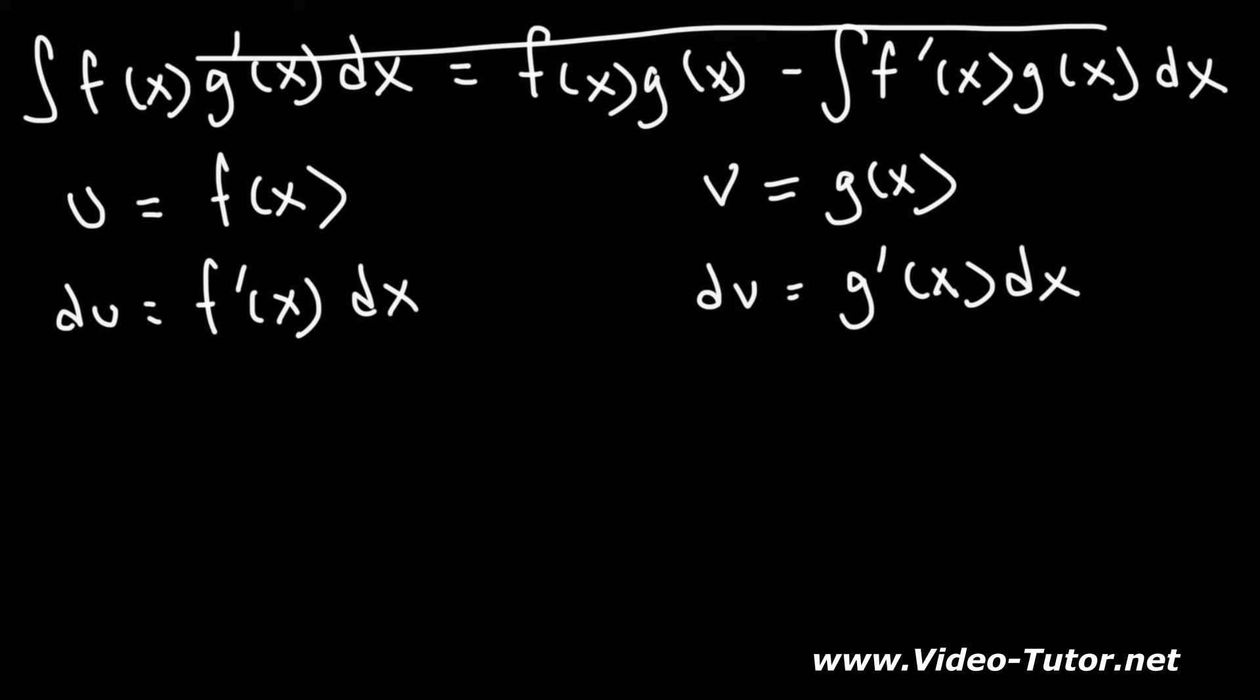So now let's replace what we have in this expression with u and v. f of x is u, and g prime of x dx will be dv. So on the left we have the integral of u times dv, and here we have f times g. f is u, g is v.